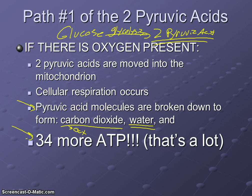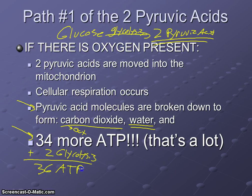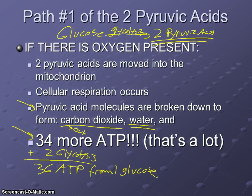That's a lot — 34 ATP from cellular respiration, plus the two we made from glycolysis. That means from one glucose, if there's oxygen present and a mitochondria available, you can make 36 total ATP from one glucose. That's about as good as it gets. The rest of the energy from the glucose — because we're not 100% efficient — gets turned into body heat. So this is path number one of pyruvic acid.